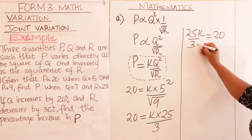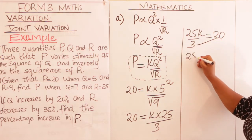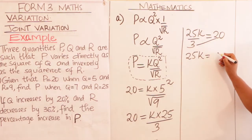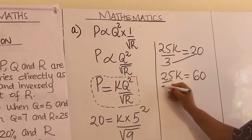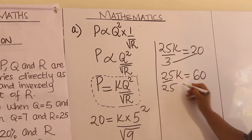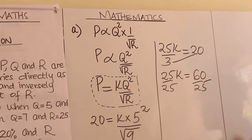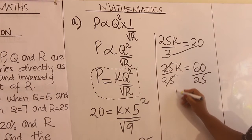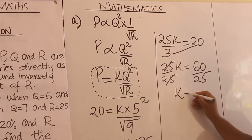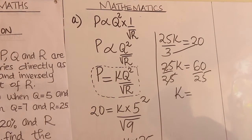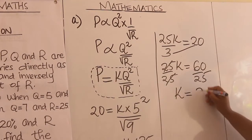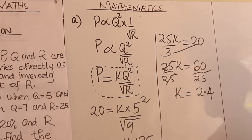Cross-multiply: 25K = 60. Divide both sides by 25. Using a calculator you get K = 2.4.